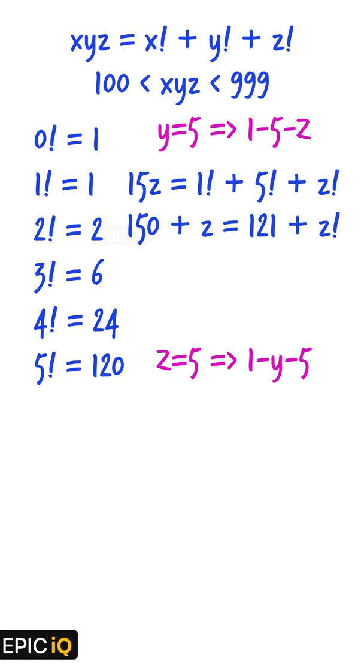That gives us z factorial is equal to 29 plus z. This is obviously larger than 24. So, z cannot be 0, 2, 3, or 4.